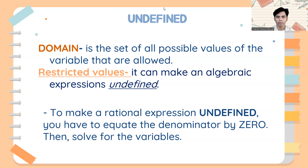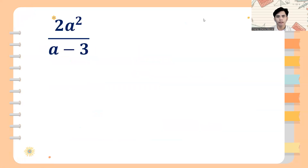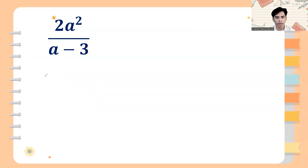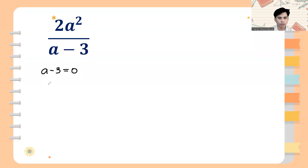Let's have an example. So for example, we have 2a squared over a minus 3. The first thing to do is to equate the denominator to zero. So we have a minus 3 equals zero. Since we need to set the denominator equal to zero, we then transpose the negative 3 to the other side. So we have a is equal to zero plus 3.